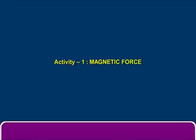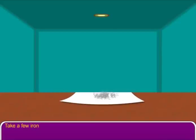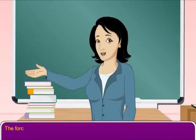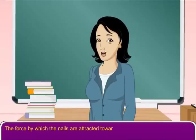Activity 1. Take a few iron nails or pins and keep them on a piece of paper. Bring a magnet near them. What do you observe? The nails or pins move towards the magnet and get stuck to it. The force by which the nails are attracted towards the magnet is called magnetic force.